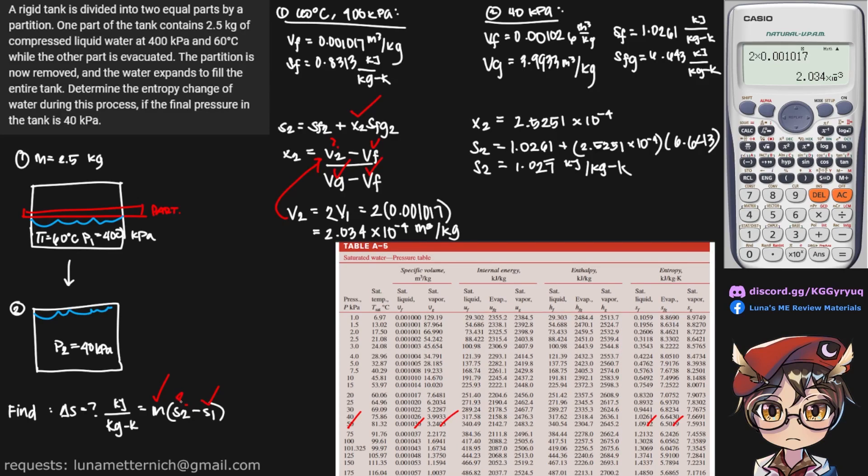And now we do have our s2, and we can find our change in entropy. Finally, after all that, we arrive at a value of 0.4912 kilojoules per Kelvin. And looks like that is our final answer.